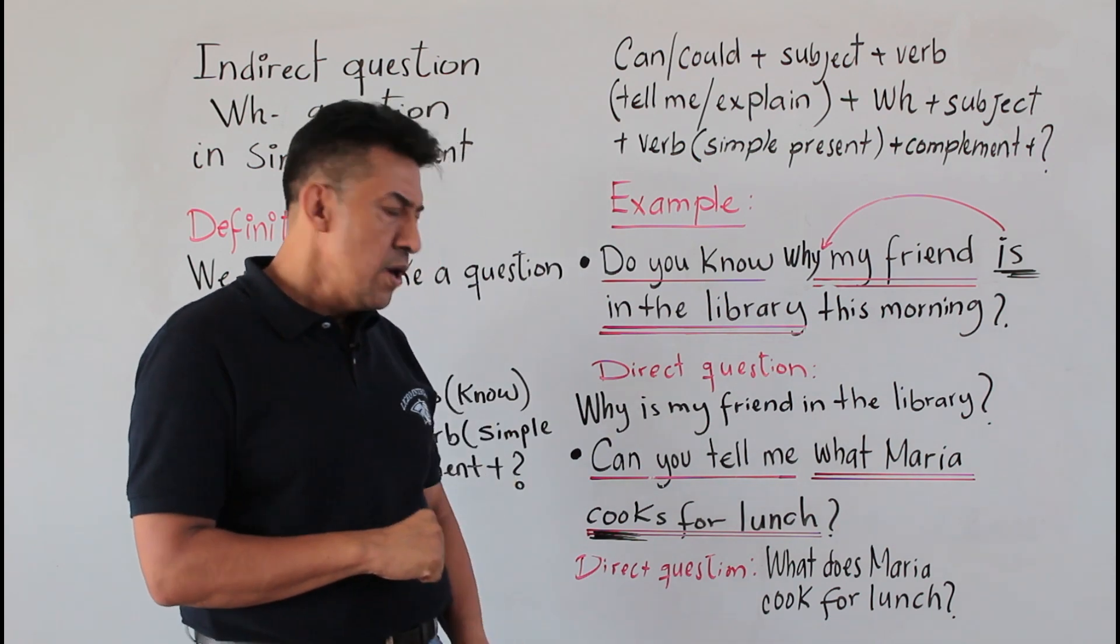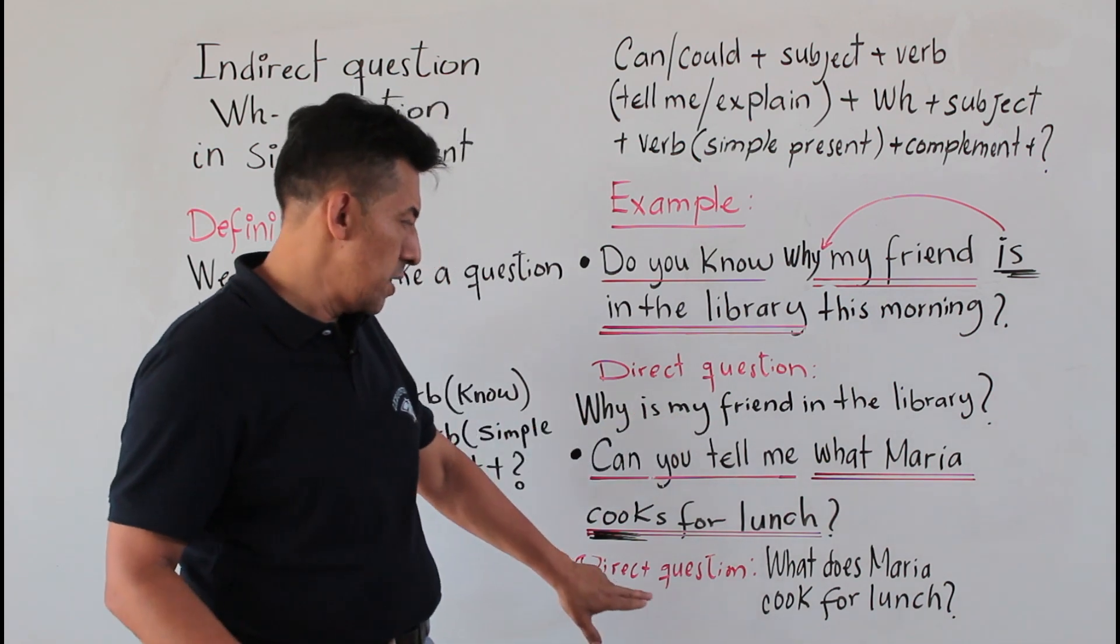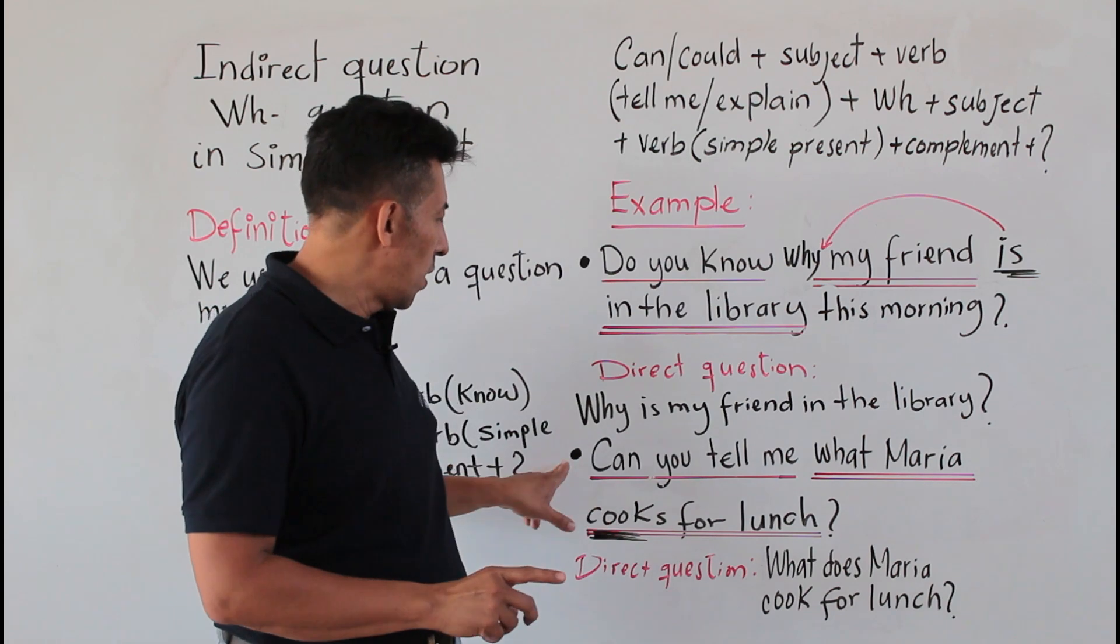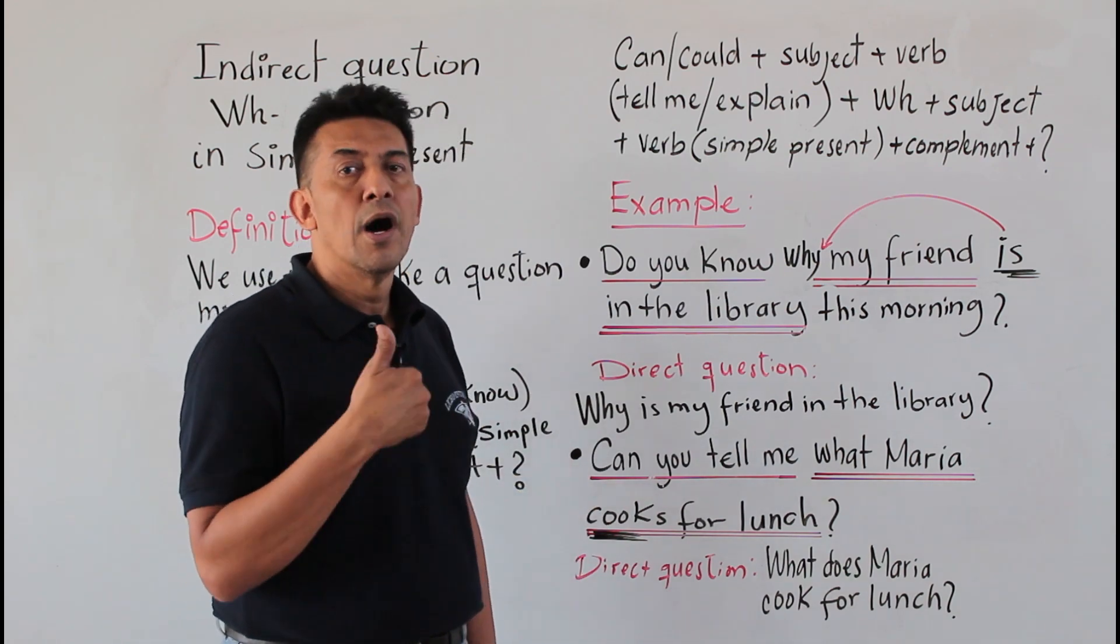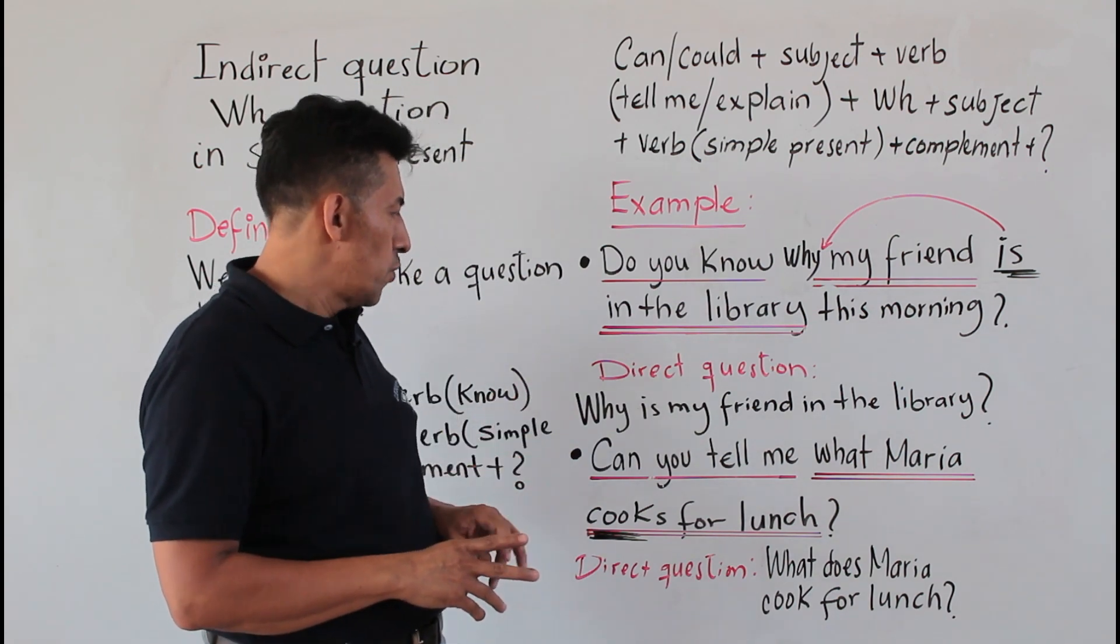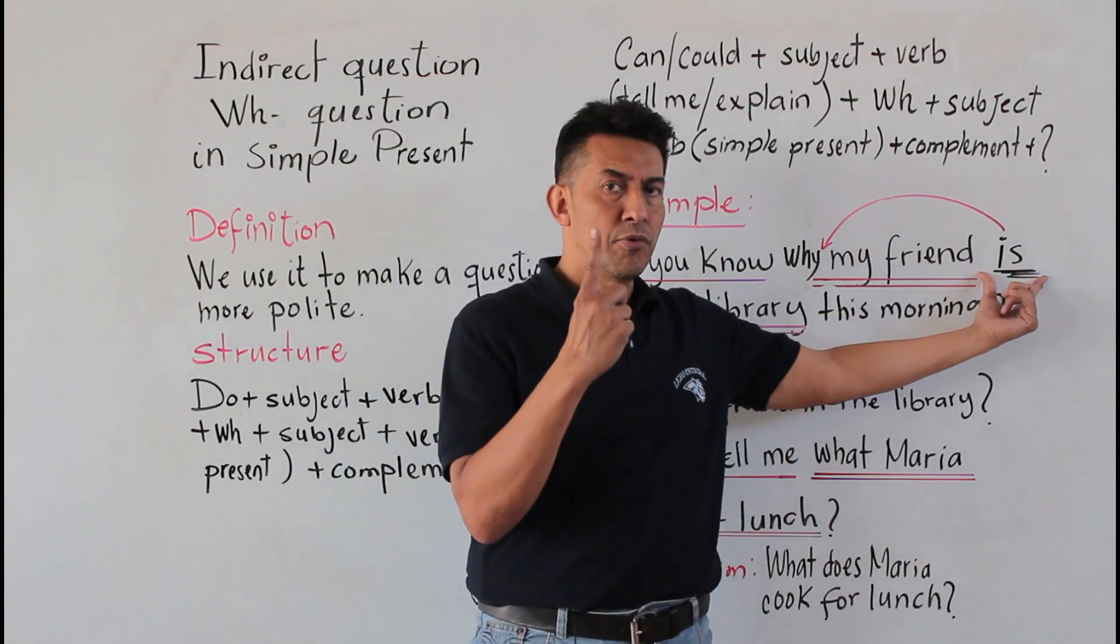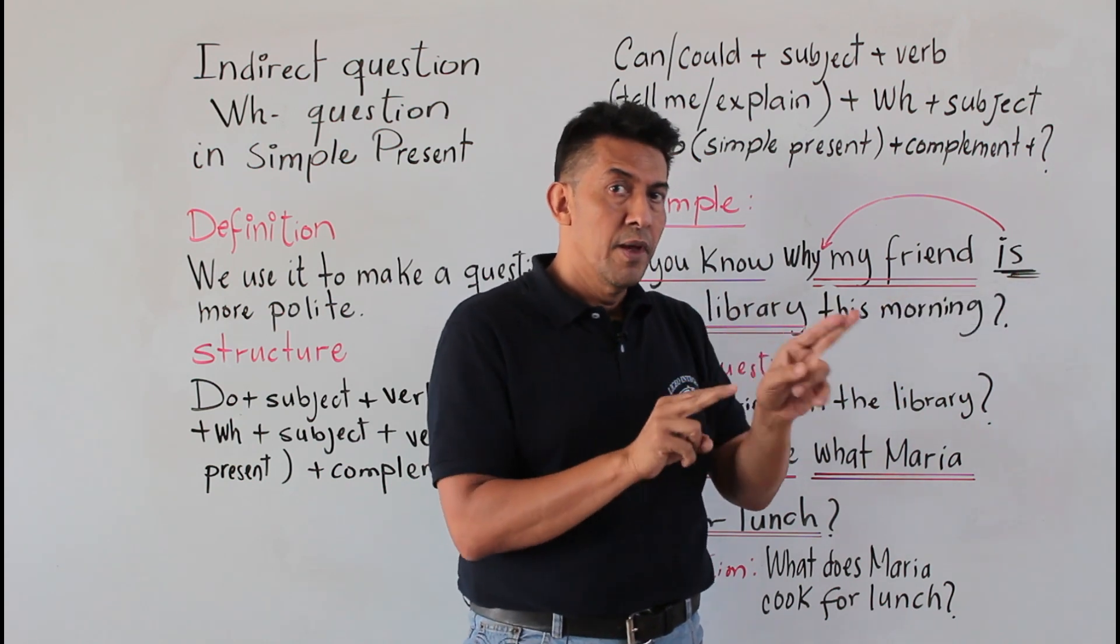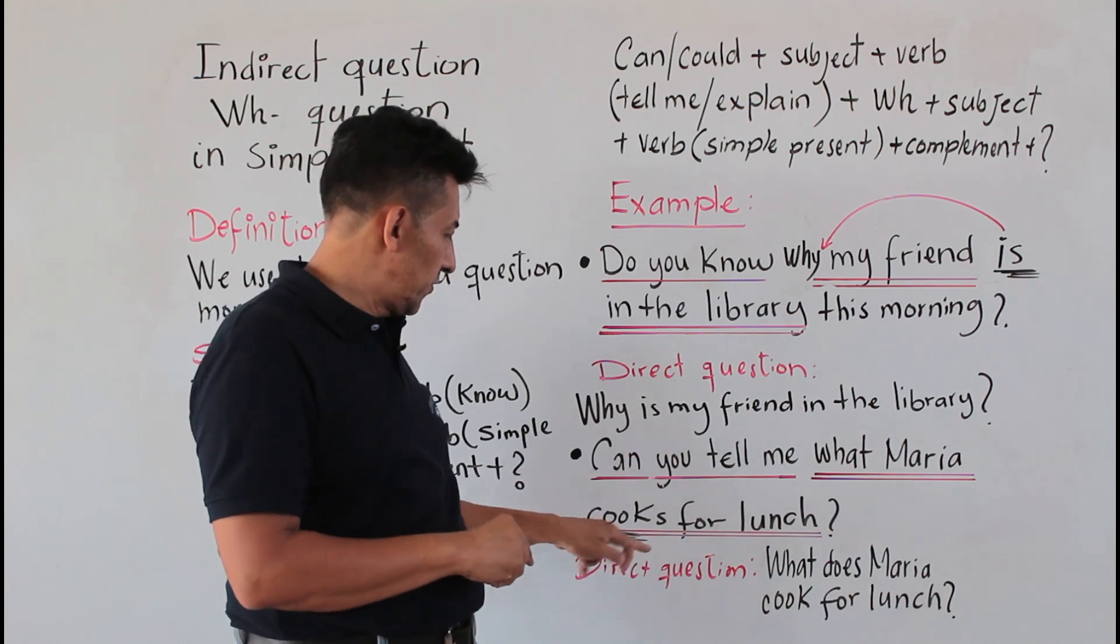But how can you ask if you want to use a direct question? 'What does Maria cook for lunch?' That would be the normal way. Remember, this is the simple verb form. In the first example, we used is, which is the verb to be. And take a look - in this sentence the verb is cook.